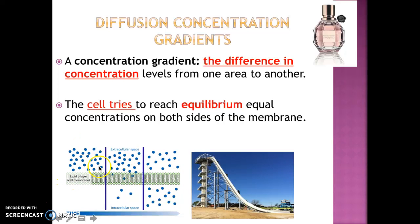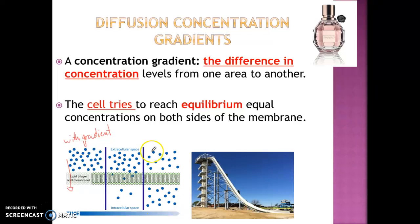Eventually the molecules will start passing through until you have equal amounts on the outside and the inside of the cell. That's what we call concentration gradient — going from different concentrations, from high to low, which we say is going with the gradient. The cell tries to reach equilibrium, which means equal concentrations on both sides of the membrane.